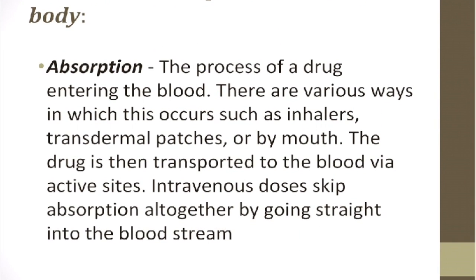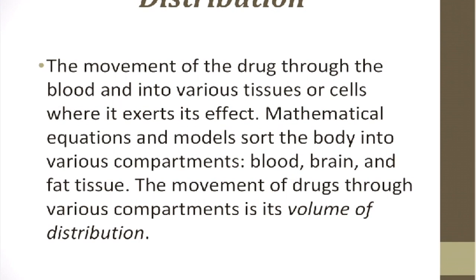There are four movements of medication throughout the body. The first is absorption — through the process of a drug entering the blood, there are various ways this occurs, such as inhalers, transdermal patches, or by mouth. The drug is then transported to the blood via active sites. Intravenous doses skip absorption altogether by going straight into the bloodstream. The second is distribution — the movement of drugs through the blood and into various tissues or cells where it exerts itself. Mathematical models sort the body into compartments: blood, brain, and fat tissues, and the movement through these is its volume of distribution.